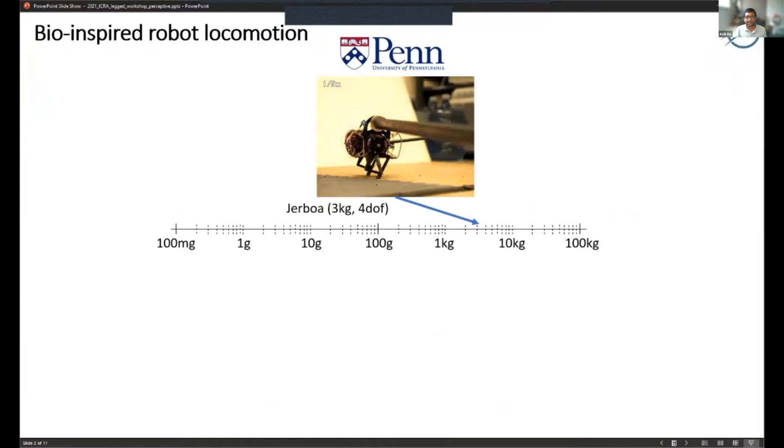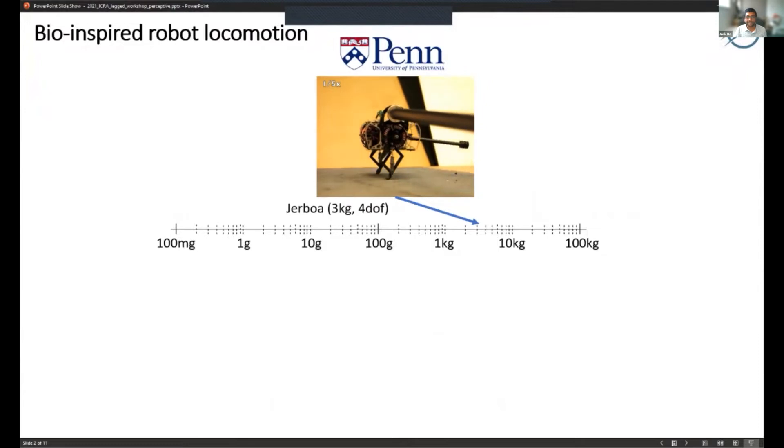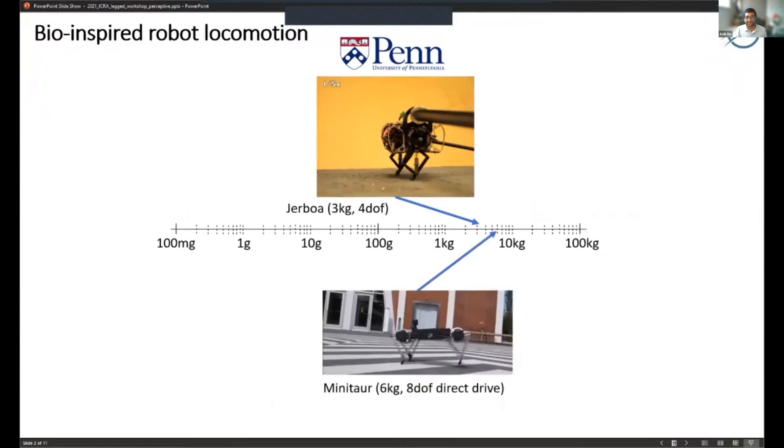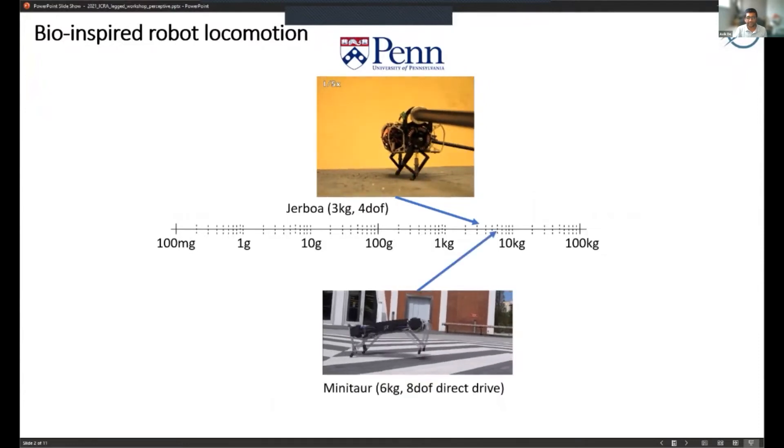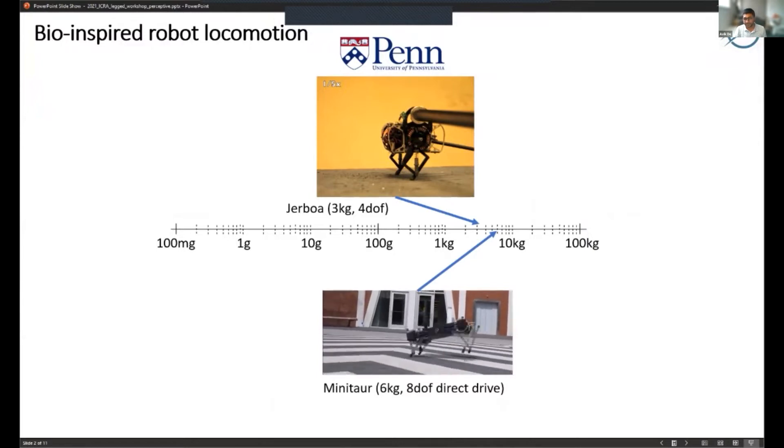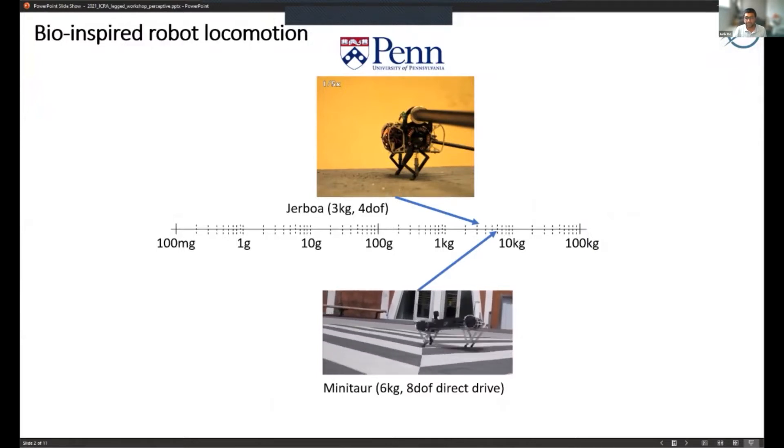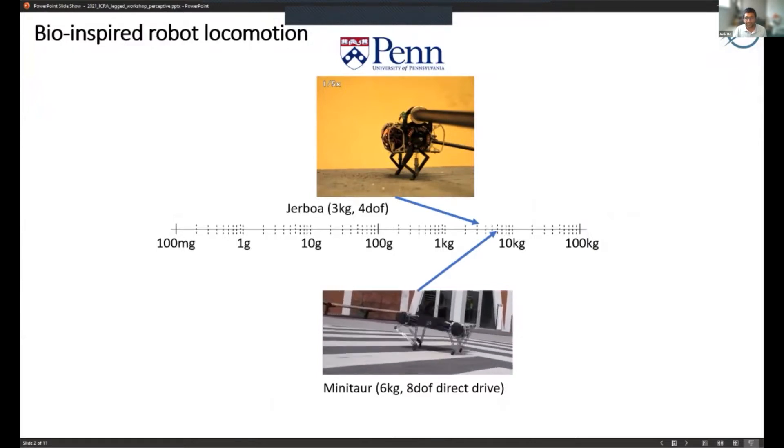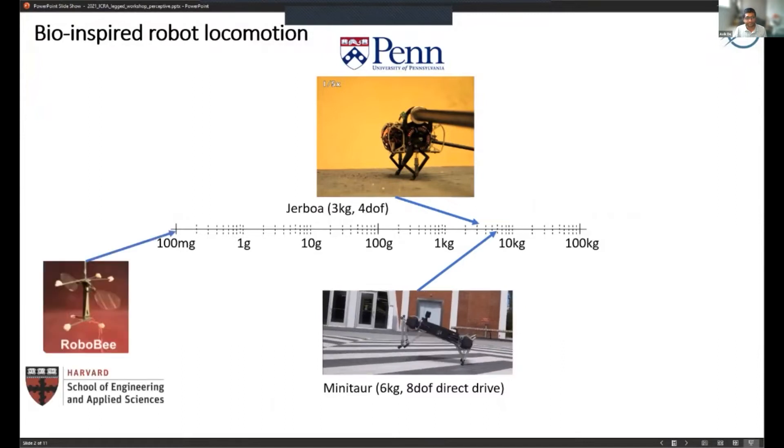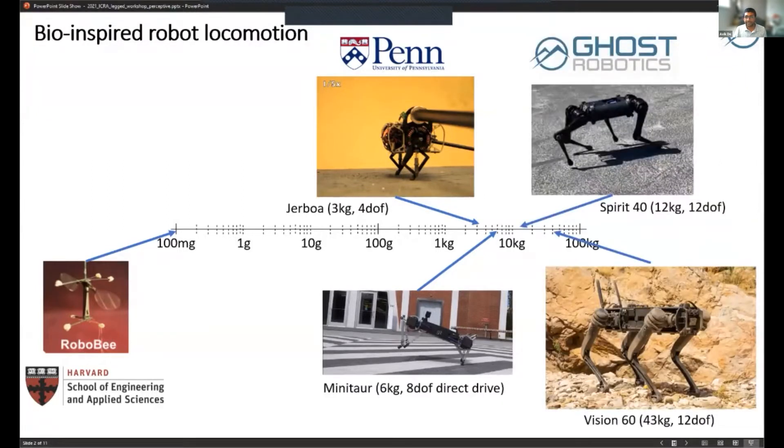Very simple underactuated popping running robots, so this was a tailed two-legged robot. The Minotaur robot which actually became the first Ghost Robotics product - a very small direct drive quadrupedal robot. In my short postdoc at Harvard I worked on the RoboBee project.